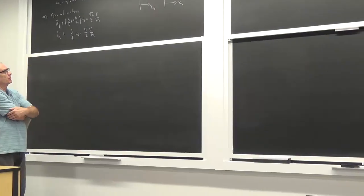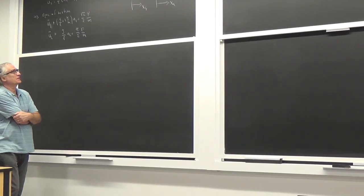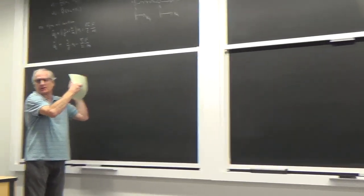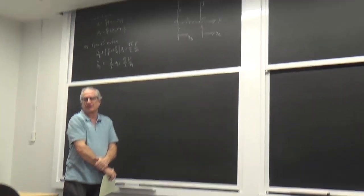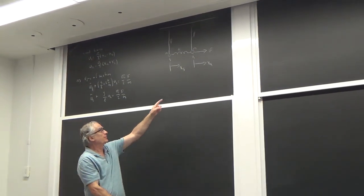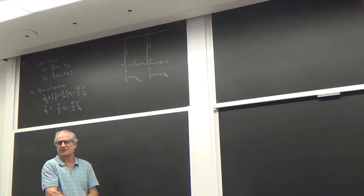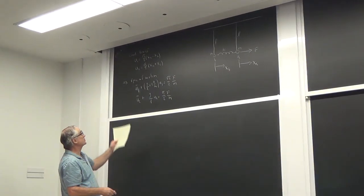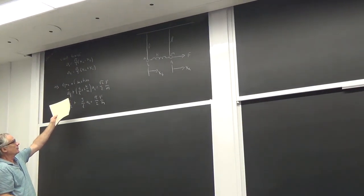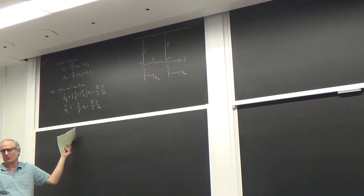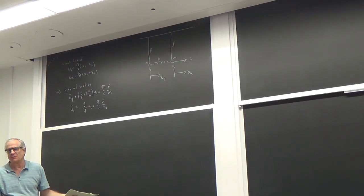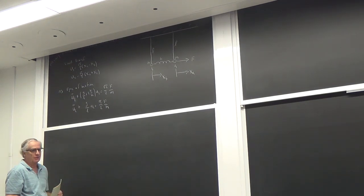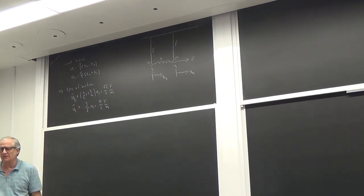We started to talk about forced coupled oscillators with this example of two pendulums that are coupled by a spring with a force on one of the masses. We got as far as doing a coordinate transformation — the same one we used for the unforced motion — to the coordinates where things diagonalize.